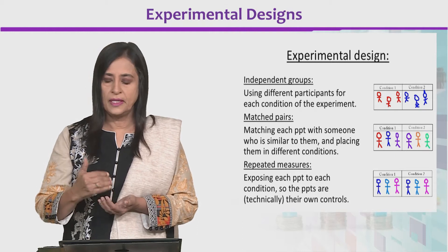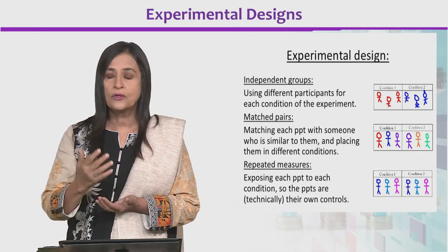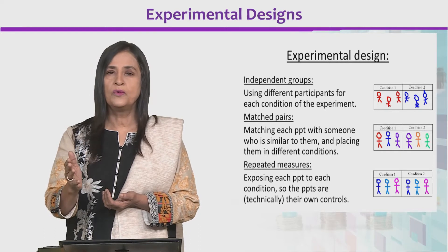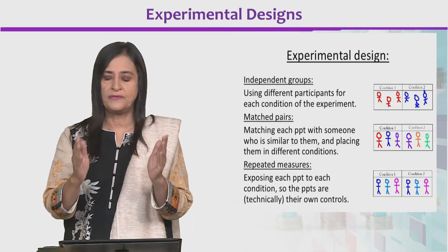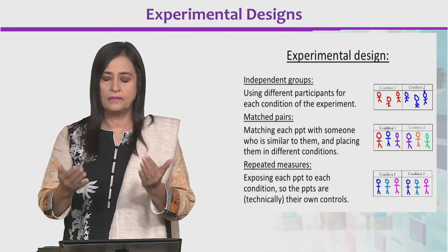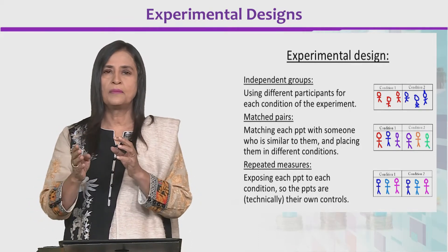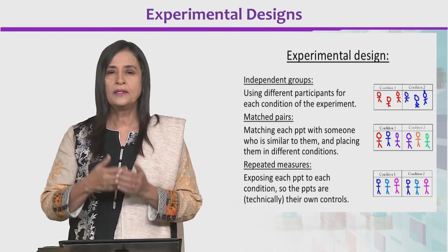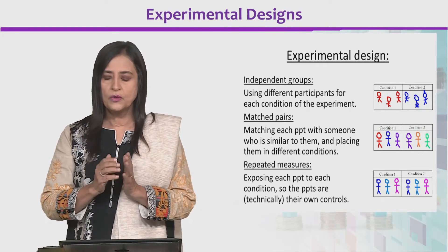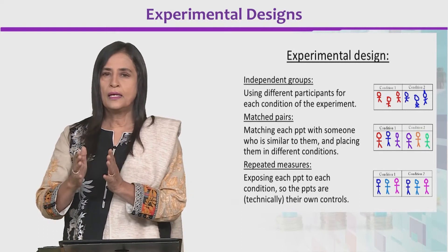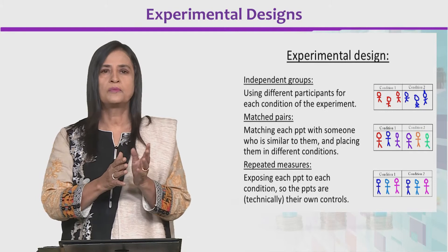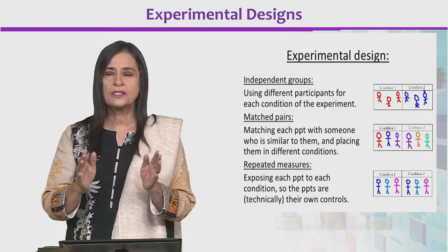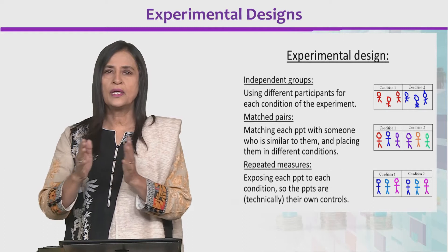Comparing these three designs: in independent groups, different participants are used for each condition — these three red and these three blue are two different groups, totally different people. In matched pairs, we match them and put one of the pair in one group and the other in the other group. In repeated measures or within-subjects design, we use the same participants in both conditions — giving them one treatment then another, making them practice for one hour then for five hours, and then testing. Same problem, but carried out in different designs.